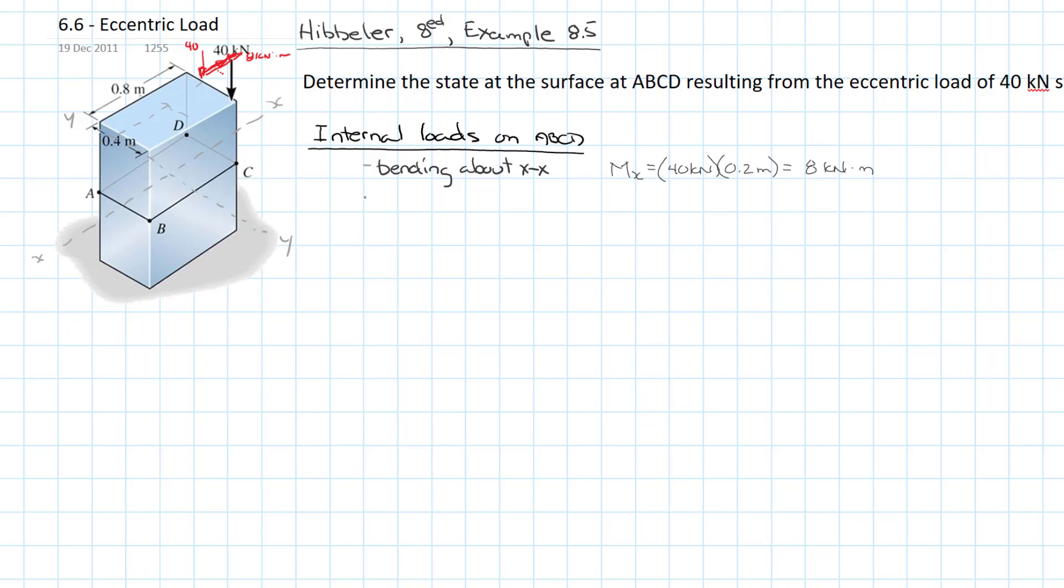And so to do that, we need to add whatever bending would be caused about the y-axis by its eccentricity. And so the bending about y, or the moment about y, is equal to that magnitude of force, 40 kilonewtons, times its perpendicular distance from that y-axis, which is 0.4 meters. And so that's equal to 16 kilonewton-meters.